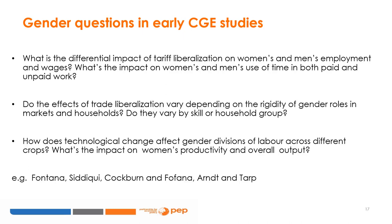Further questions include: do the effects of trade liberalization vary depending on the rigidity of gender roles in markets and households, and does the impact vary by skill or household group? How does technological change affect gender divisions of labor across different crops, what is the impact on women's productivity and remuneration in agriculture, and what is the impact of gender differences in labor allocation on overall output?